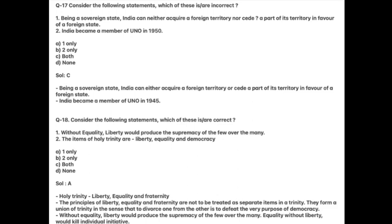Consider the following statements. Which of these are correct? One: Without equality, liberty would produce the supremacy of the few over the many. Two: The items of the holy trinity are liberty, equality, and democracy. Answer is A. The holy trinity comprises liberty, equality, and fraternity — not democracy. The principles of liberty, equality and fraternity are not to be treated as separate items but form a union of trinity. Without equality, liberty would produce the supremacy of the few over the many.